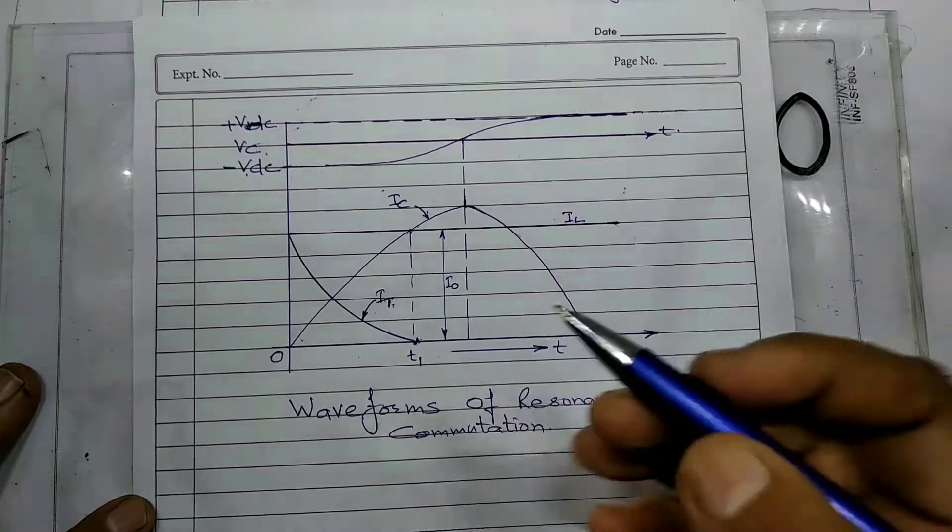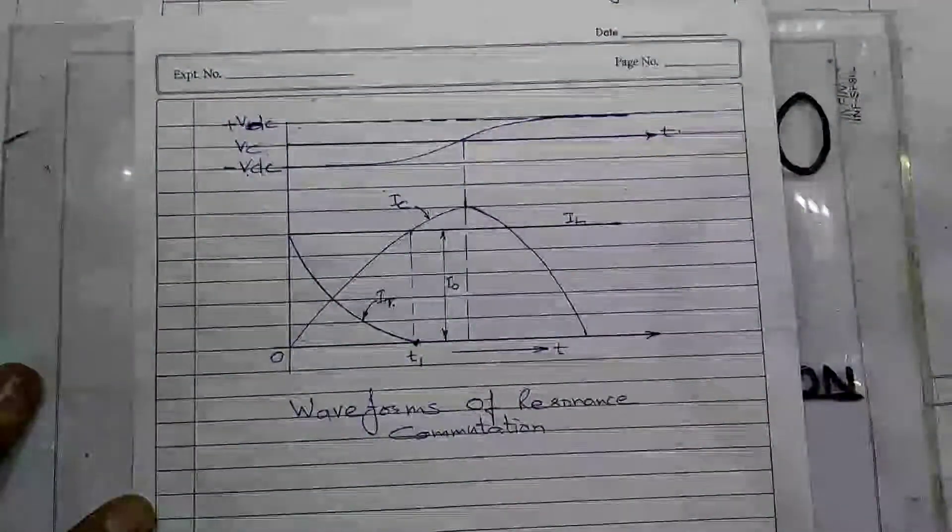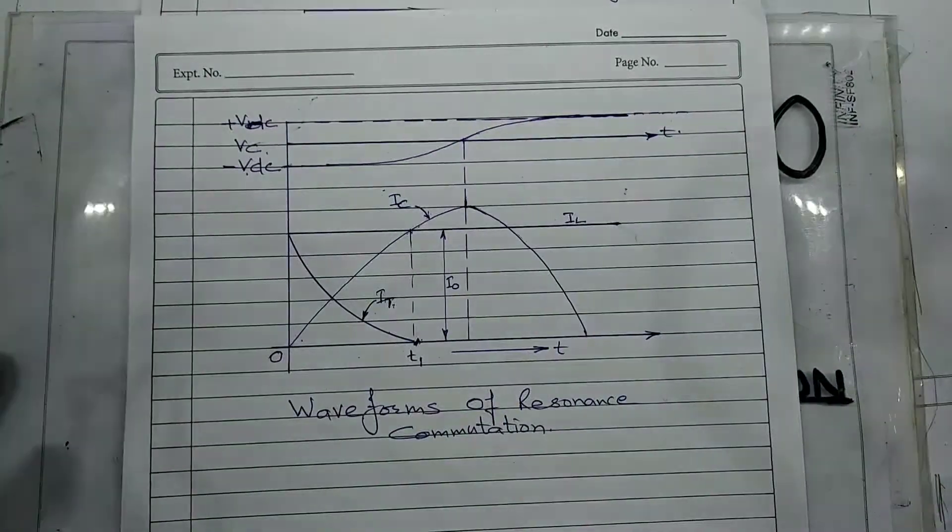So these are the waveforms of resonance commutation or current commutation circuit.